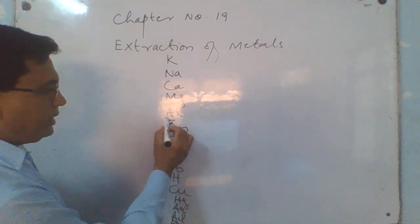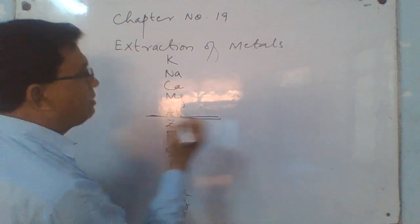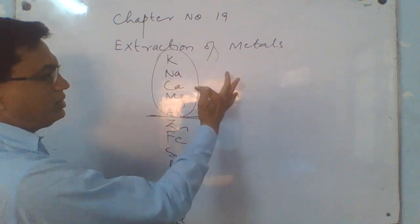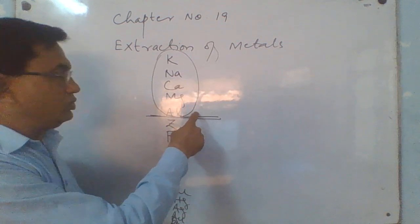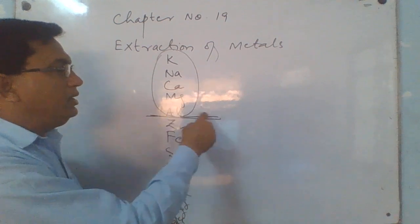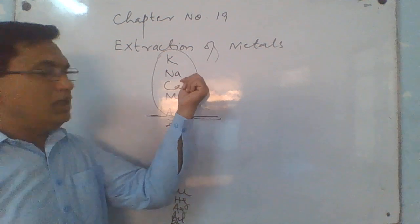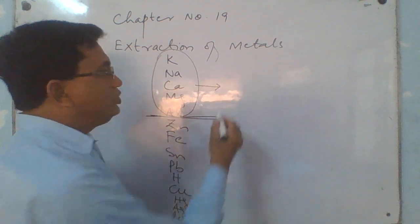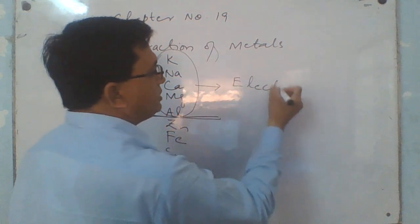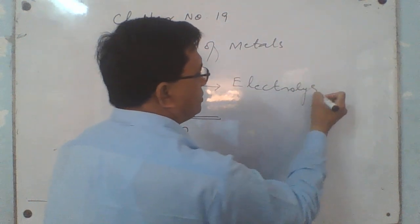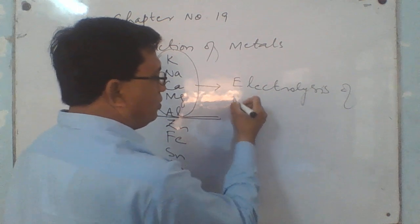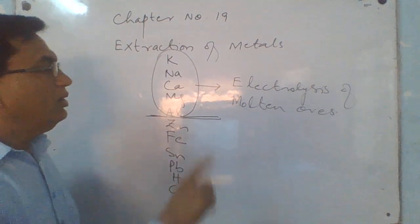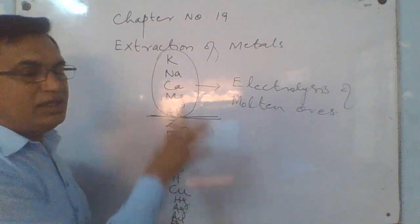Up till aluminium, the compounds of these reactive metals — potassium, sodium, calcium, magnesium, and aluminium — are maximally stable and cannot be obtained from their compounds quite easily. That's why, to extract all these reactive metals, only one method is used, which is called electrolysis of molten ores. This is the only method by which these reactive metals can be obtained.